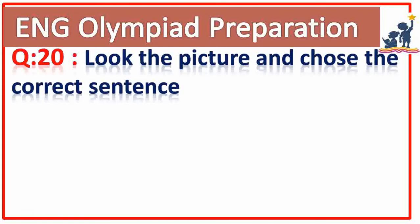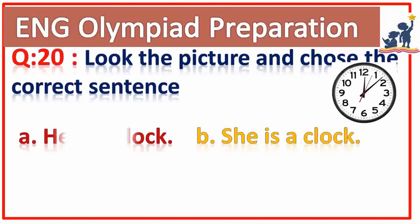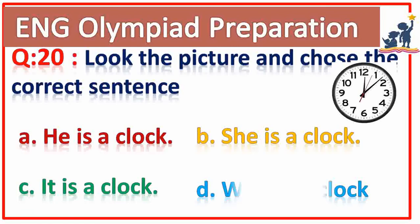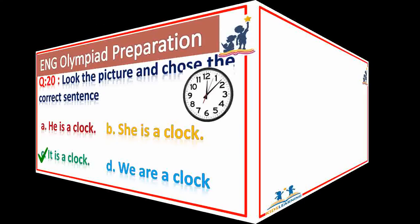Question number twenty: look at the picture and choose the correct sentence. Option C — it is a clock. Very good.